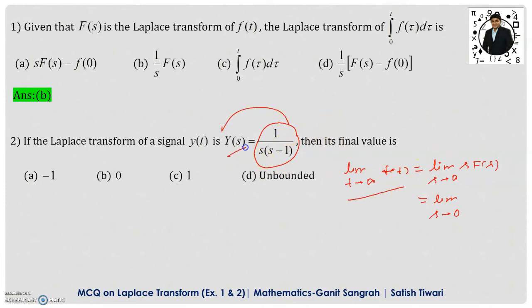We have the function of s, so it's better to calculate the RHS part. I put here the function of s, which is 1 upon s into s minus 1. If you observe, s will get cancelled, and if you put s equals to 0, this s will be 0, and we will get minus 1. So minus 1 is the correct answer for this question, and option a is the correct option.